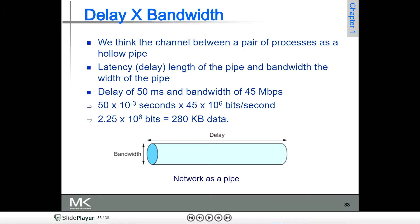45 Mbps — observe carefully — Mbps means megabits per second, that is 10 to the power of 6. As I told you in the previous slide, 45 into 10 to the power of 6 bits per second.